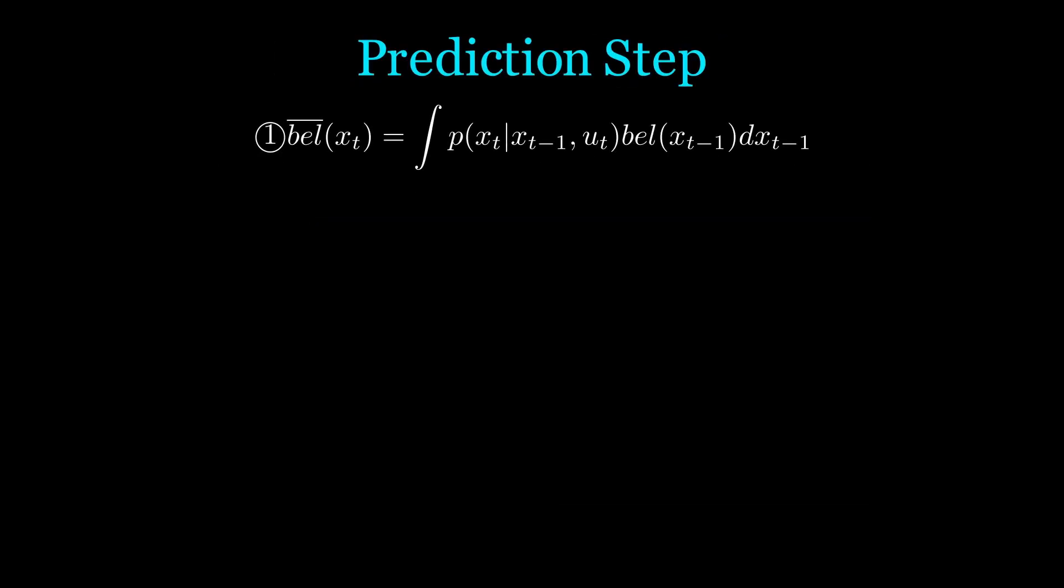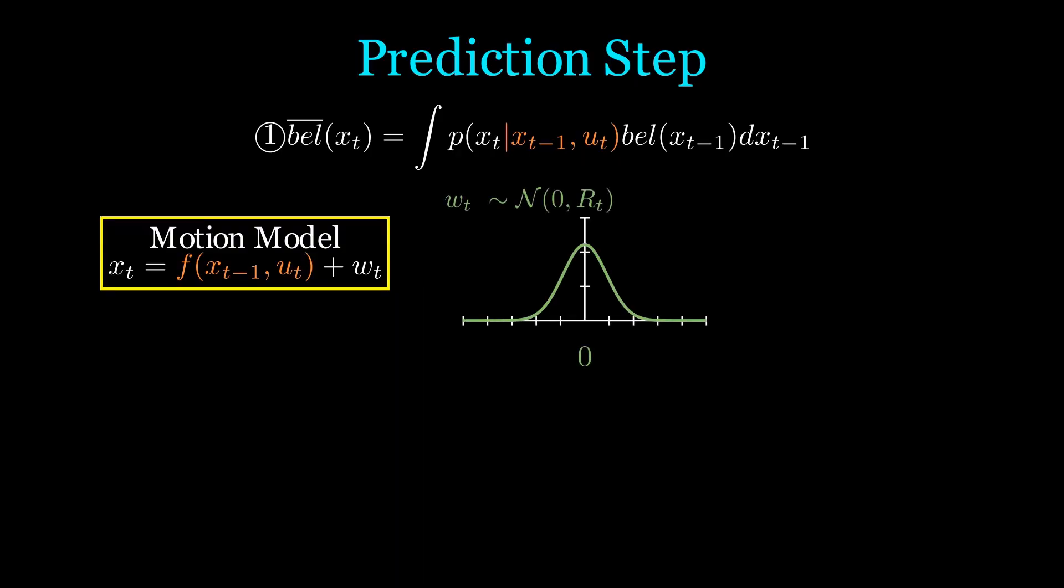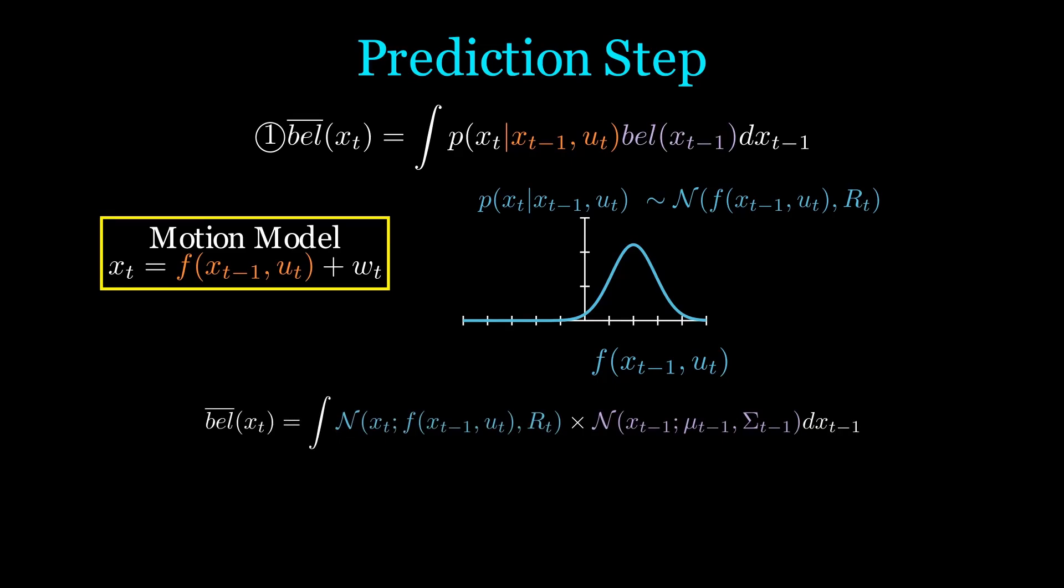In the prediction step, we will proceed as we did in the Kalman filter. We use the motion model to compute p of xt given xt minus 1 and ut. Since we are given xt minus 1 and ut, if we freeze this in our motion model, we see that the resulting probability distribution is simply the random variable wt shifted up by a constant. So we start with p of wt, which is a Gaussian, and end up with a distribution that has the same covariance as wt, but now has a mean of f of xt minus 1, ut.